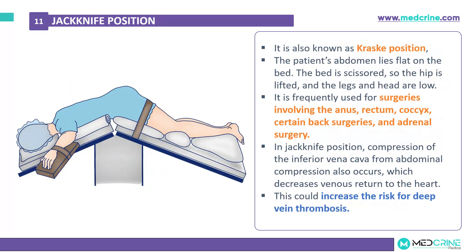Jackknife position, also known as Kraske position, is where the patient's abdomen lies flat on the bed and the bed is scissored so that the hip is lifted while the legs and head are lowered. It is frequently used for surgeries involving the anus, rectum, coccyx, certain back surgeries, and adrenal surgeries. In jackknife position, compression of the inferior vena cava from abdominal compression occurs, which decreases venous return to the heart and could increase the risk of deep venous thrombosis.